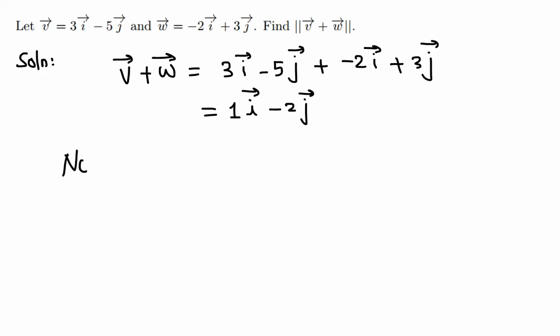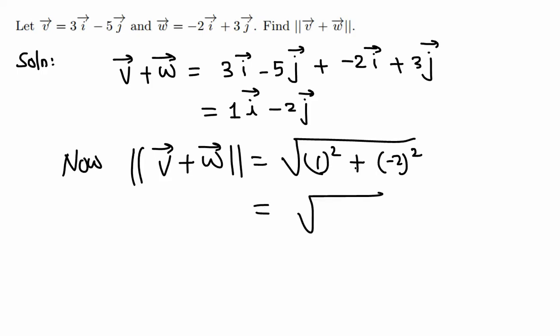Now we need to find the magnitude of this vector. The magnitude of v plus w is given by the square root of the sum of the coefficients squared. So 1 squared plus negative 2 squared, which is 1 plus 4, equals square root of 5.